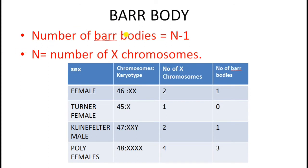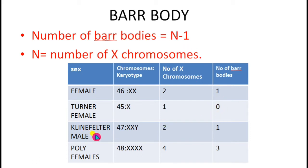We can easily calculate the number of Barr bodies in an individual using a simple formula: number of Barr bodies = n − 1, where n equals the number of X chromosomes. A normal female contains 46 chromosomes with 2 X chromosomes, so 2 − 1 = 1 Barr body. Turner's female contains 45 chromosomes with only 1 X chromosome, so 1 − 1 = 0 Barr bodies. Klinefelter's males contain 47 chromosomes with 2 X chromosomes and 1 Y chromosome, giving 1 Barr body. Polyfemales with 4 X chromosomes have 4 − 1 = 3 Barr bodies.